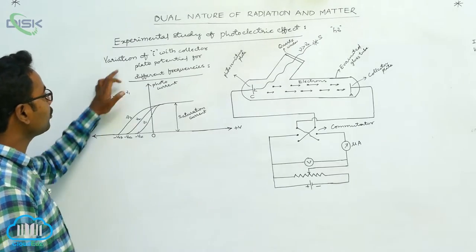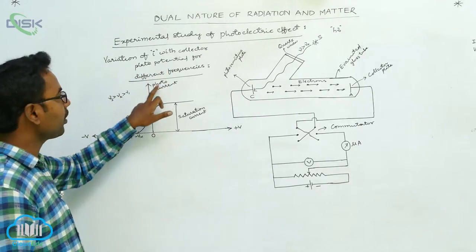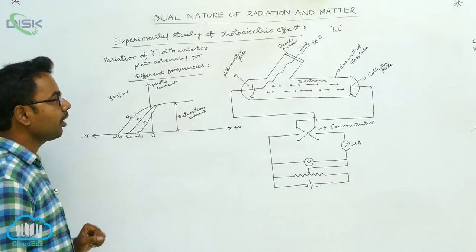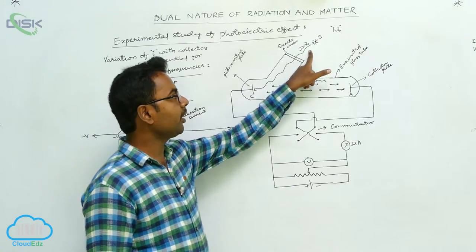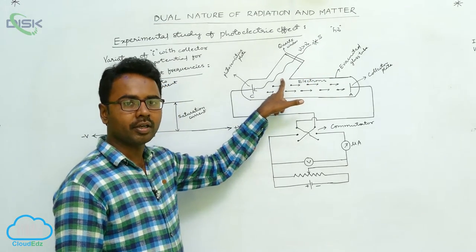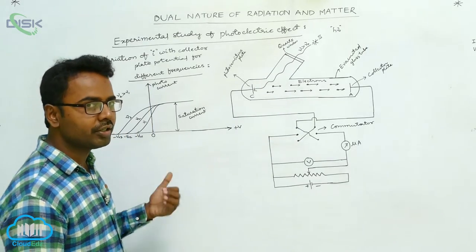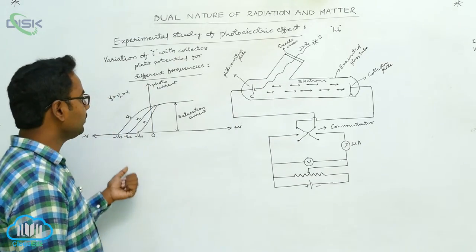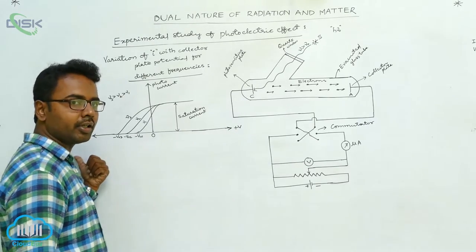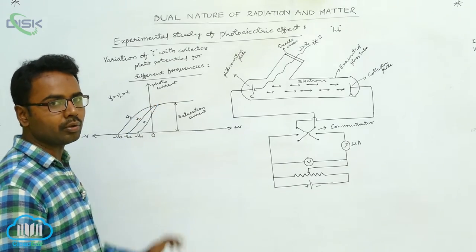Here we study the variation of photocurrent with the collector plate potential for different frequencies of incident radiation. We are taking monochromatic light incident with the same intensity in all cases, but we are changing the frequency. By changing the frequency, we study how the photocurrent changes with the potential of the collector plate.